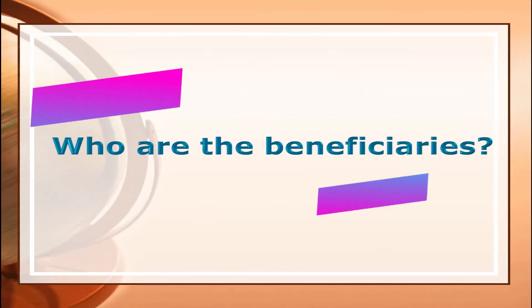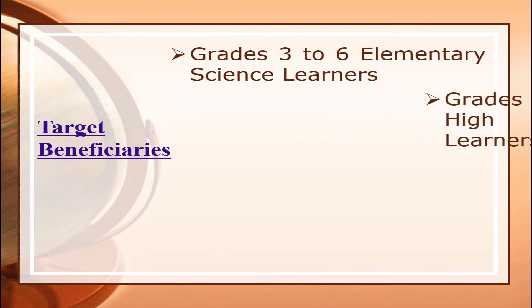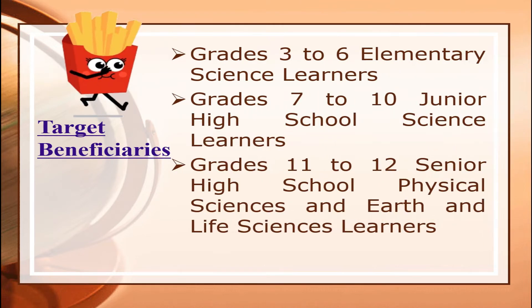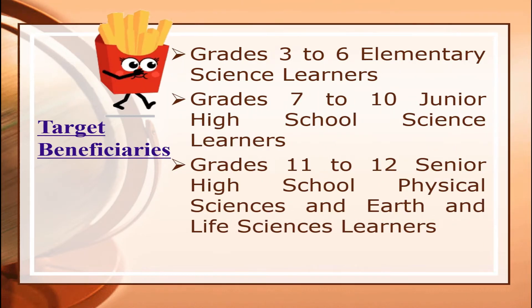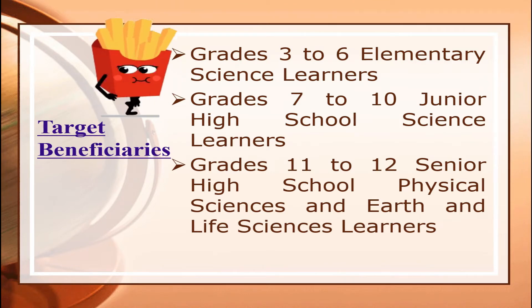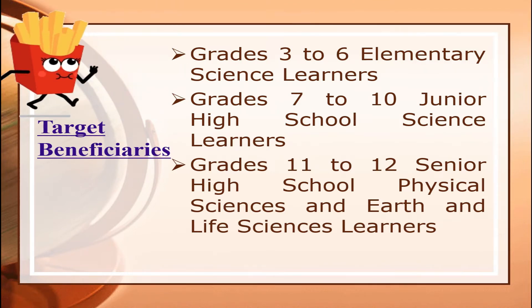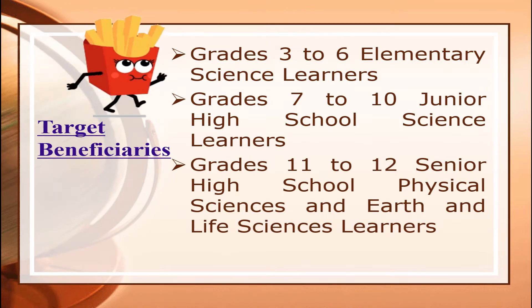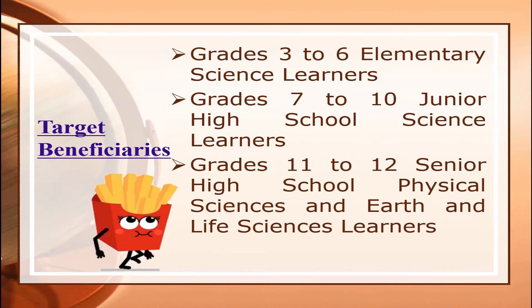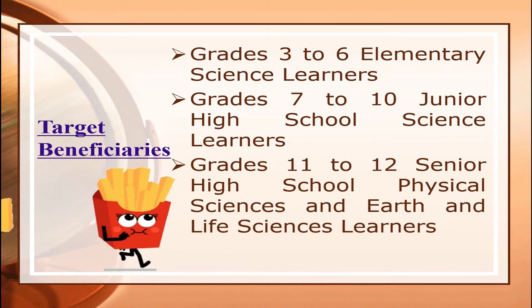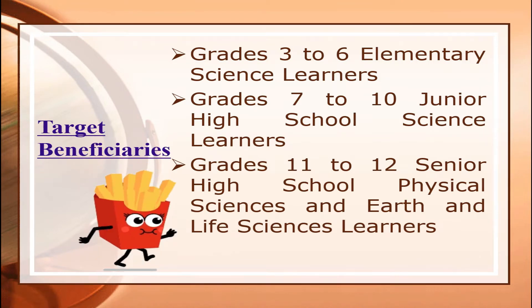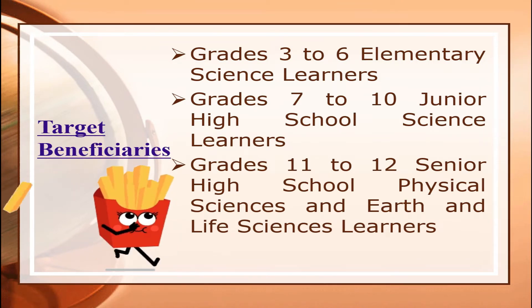Who are the beneficiaries? The target beneficiaries are Grades 3 to 6 elementary science learners, Grades 7 to 10 junior high school science learners, and Grades 11 to 12 senior high school physical sciences and earth and life sciences learners.